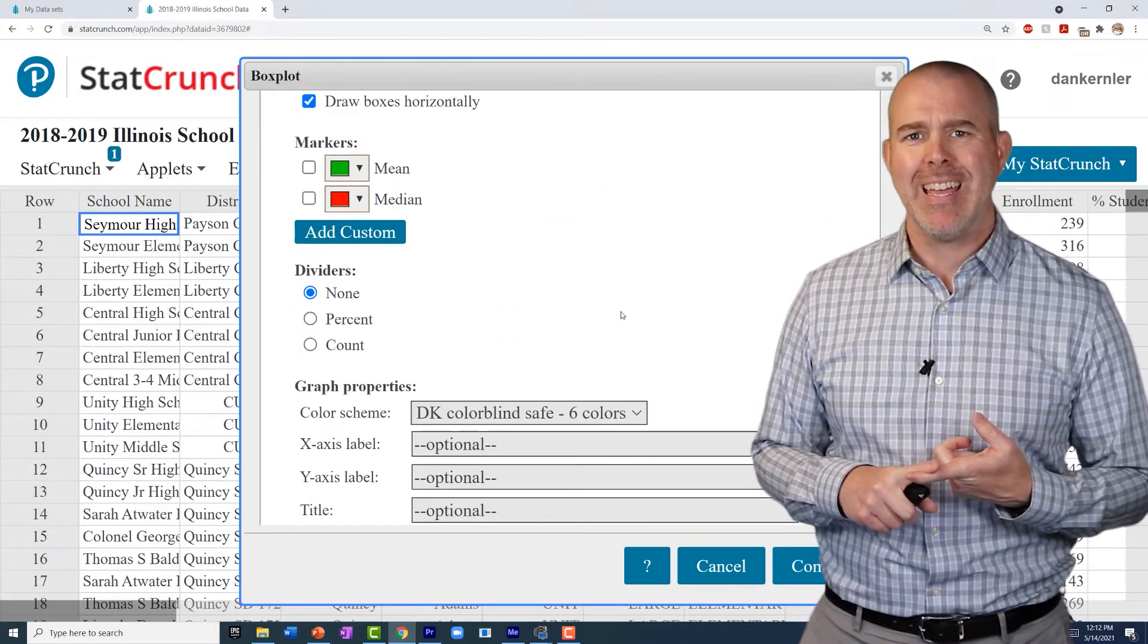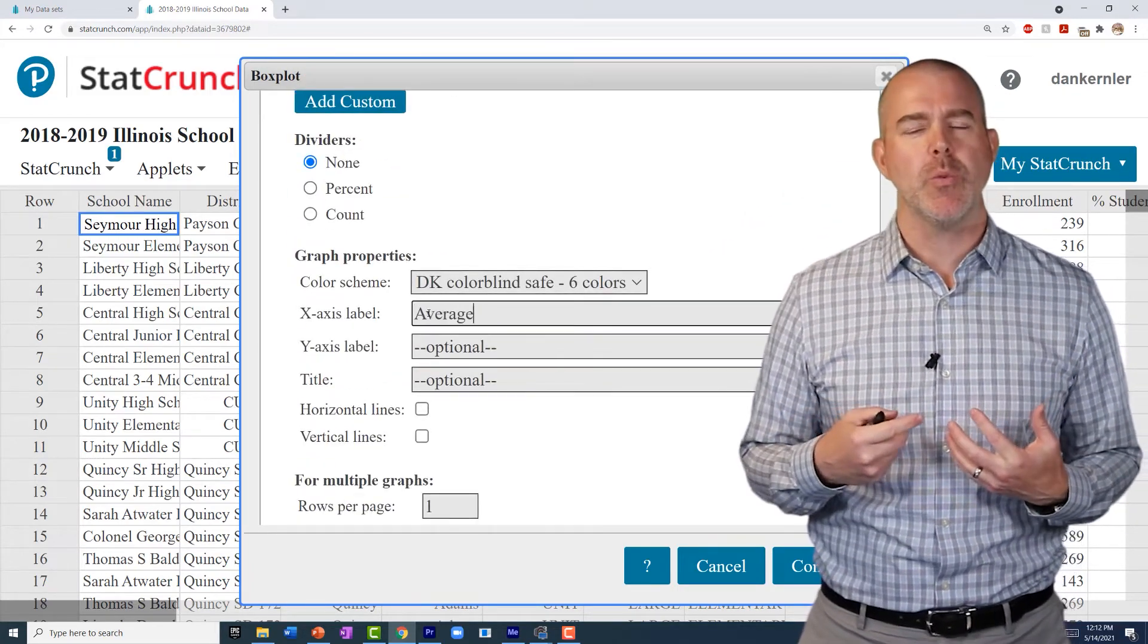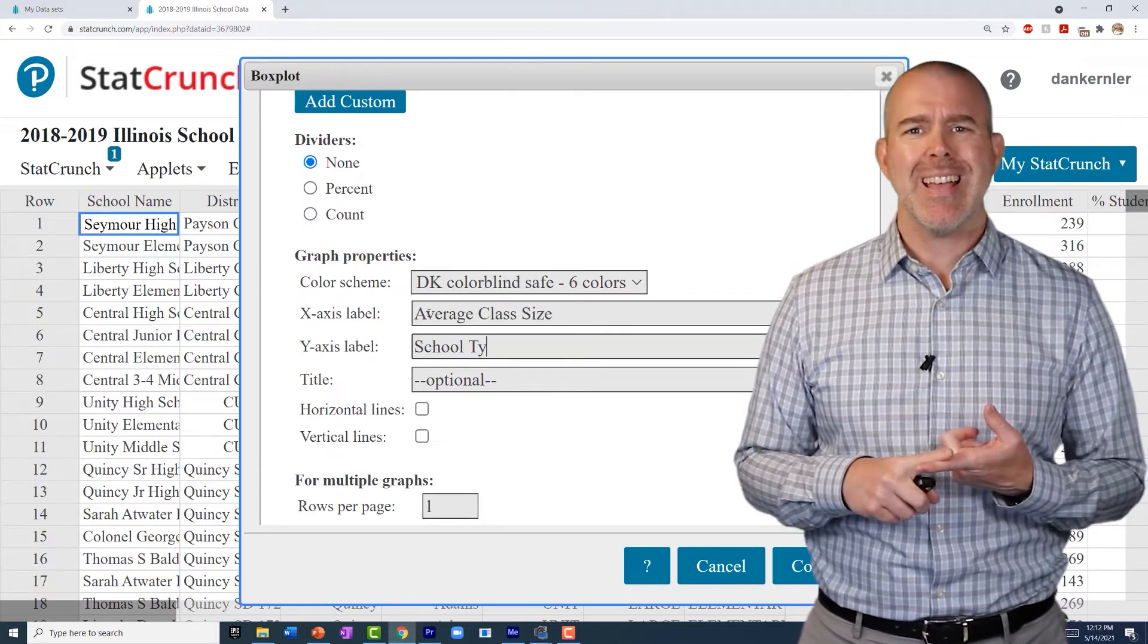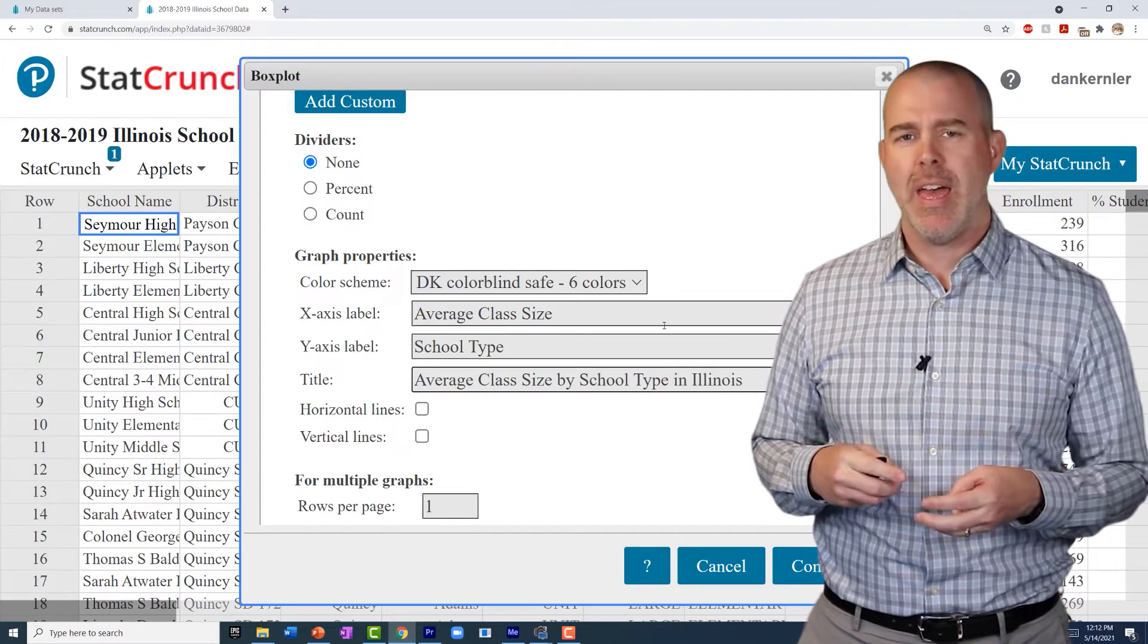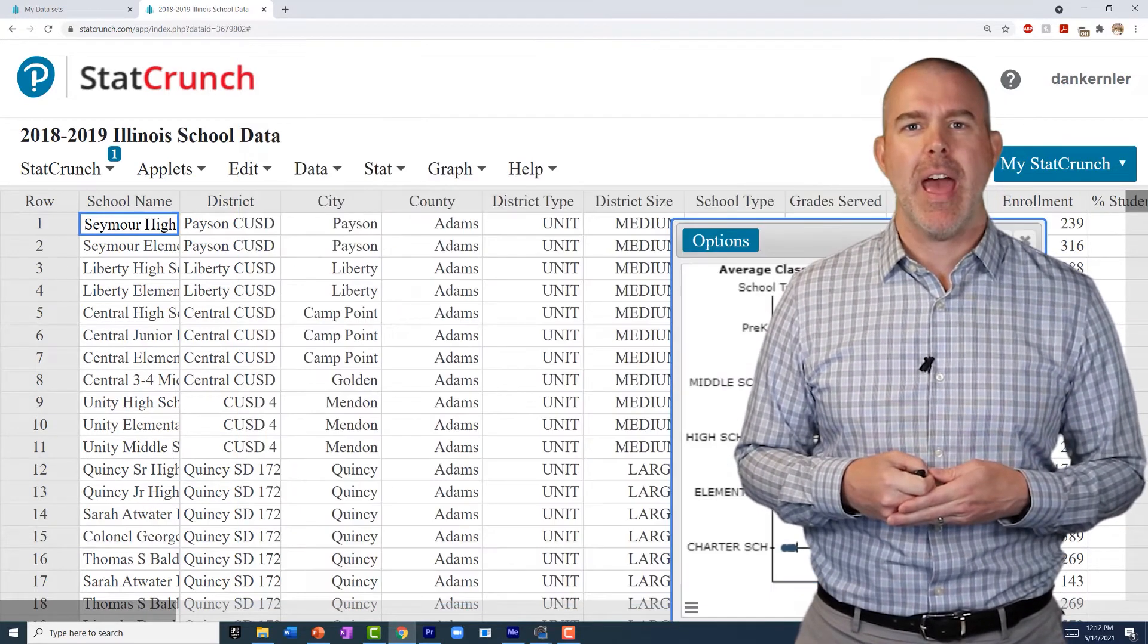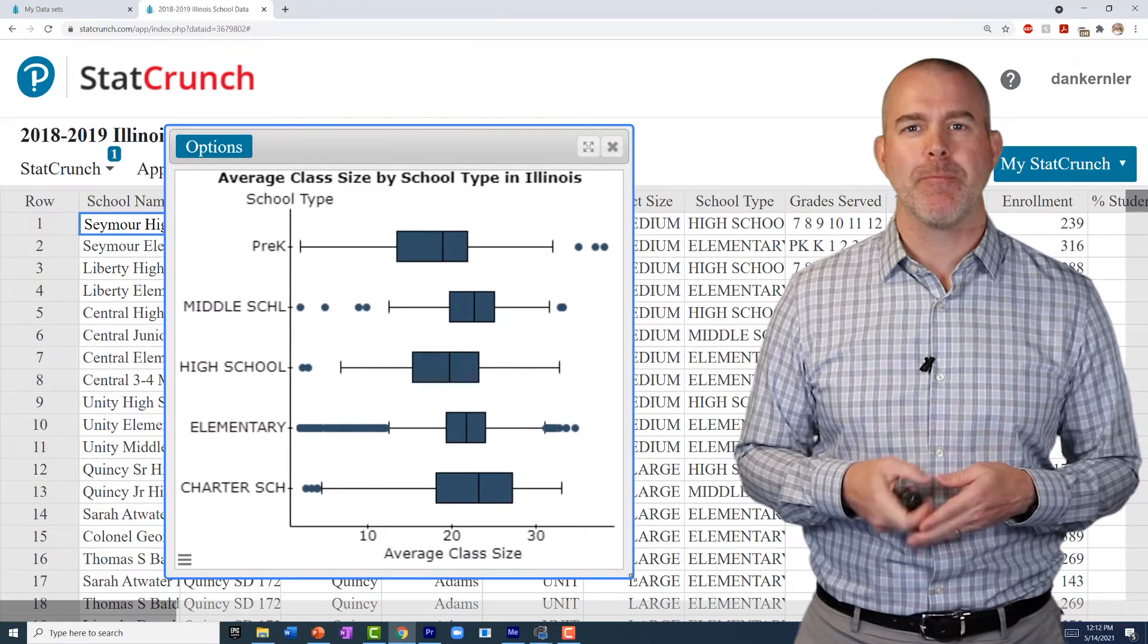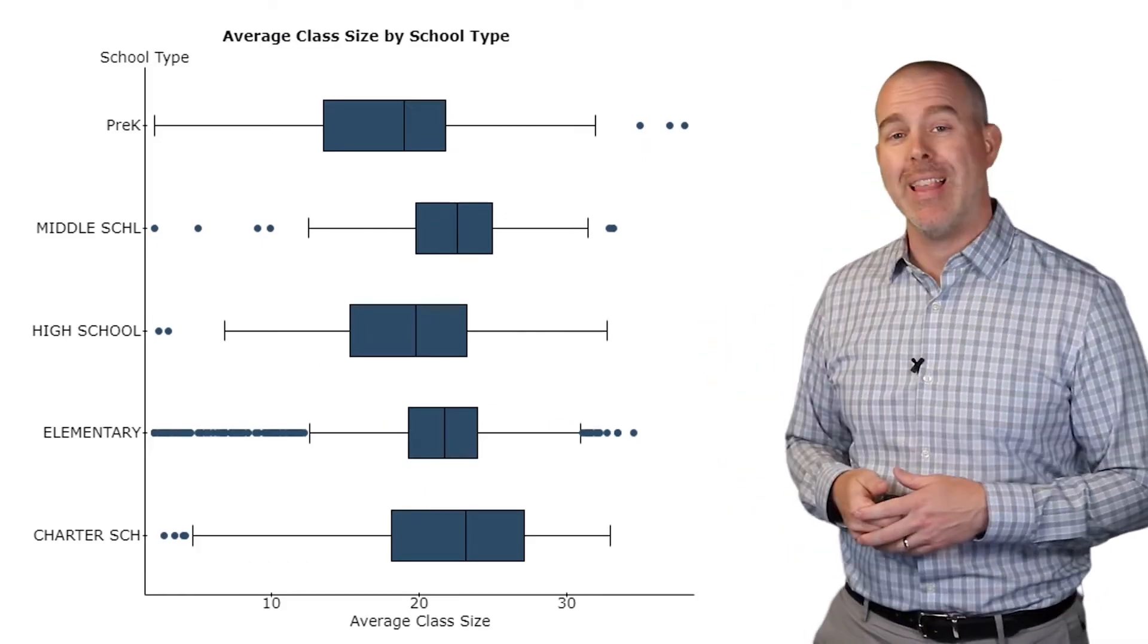I'm going to do them horizontally again. That for me is an easier visual. And then we'll put in our x-axis label. The y-axis here will be school type. And then we'll put a nice title on that graph as well. And it should look something like this.